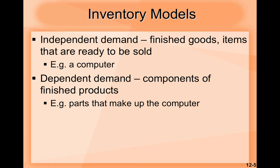Looking at inventory models: independent demand refers to finished goods items that are ready to be sold — for example, a computer. Dependent demand refers to the components of finished products — for example, the parts that make up the computer. With that example we should have a better understanding, because in independent demand it's the whole complete product, like a computer or a car, and in dependent demand we have the parts that make up that computer or car.